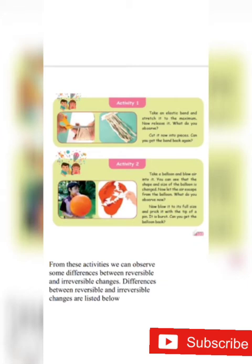Let's see one more activity. Take a balloon and blow air into it. You can see that the shape and size of the balloon has changed. Now let the air escape from the balloon. We get the balloon back, so this change is called reversible. Now take the same balloon, blow it to full size, and burst it with a pin. Can you get the balloon back? No, we can't. So this process is called irreversible.